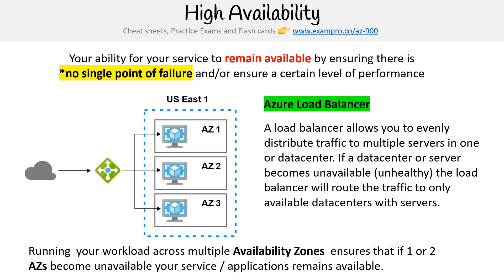If a data center or server becomes unavailable — unhealthy — the load balancer will route the traffic to only available data centers with servers. So there you go, that is high availability.